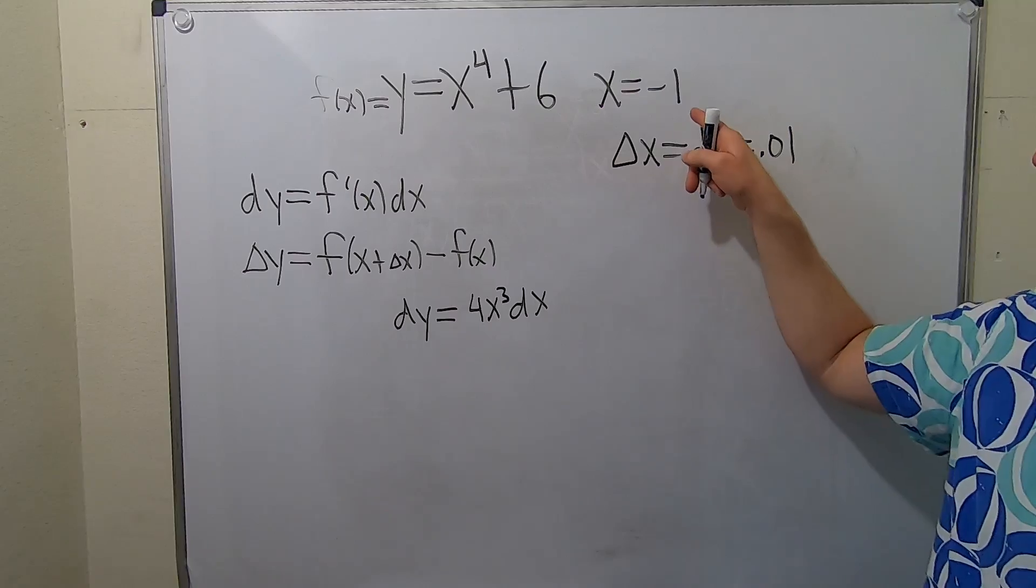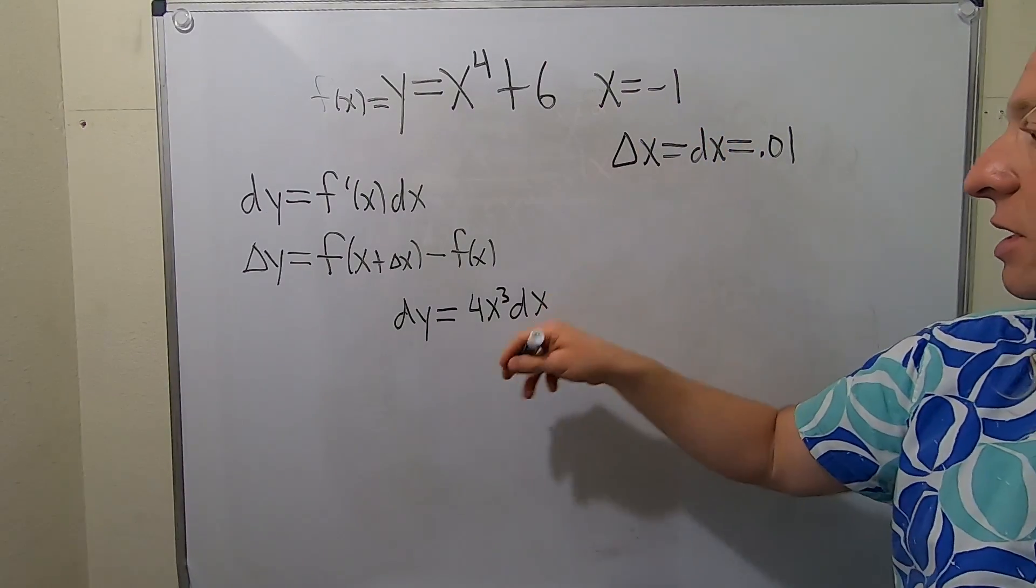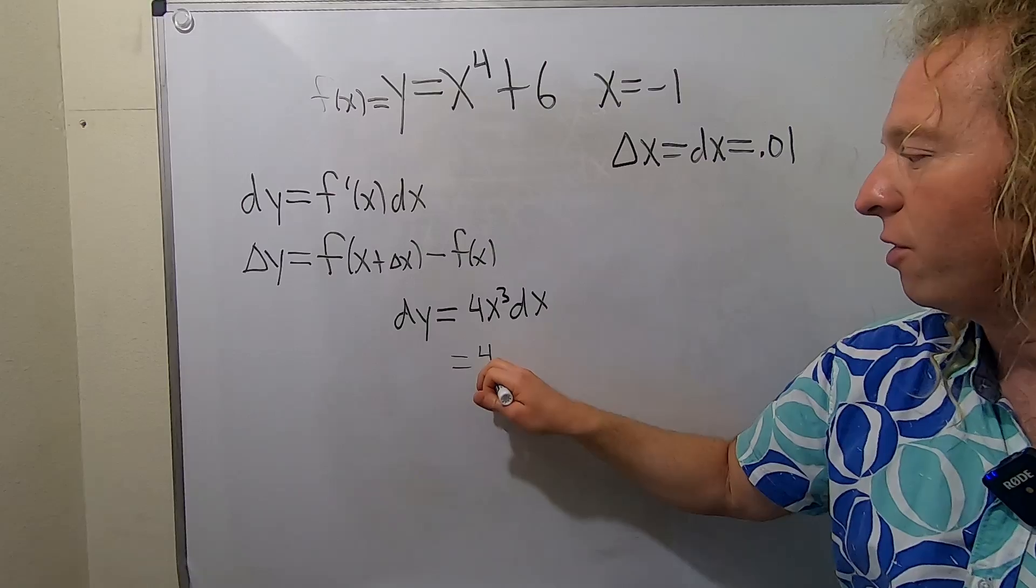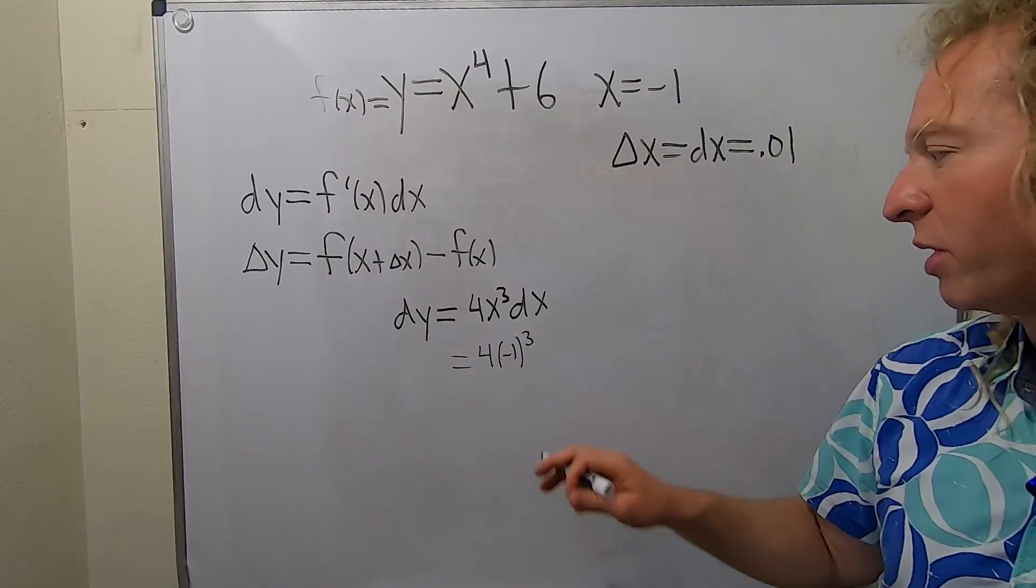Now we can plug in the numbers. x is negative 1, so this is 4 times negative 1 cubed. And dx is 0.01.